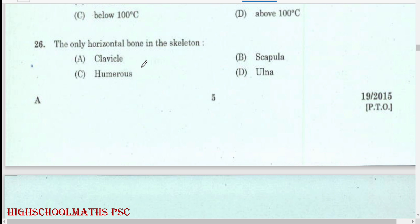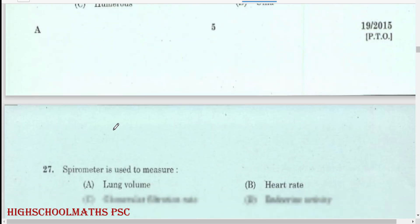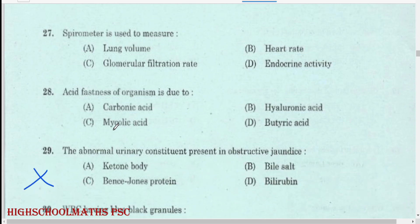The only horizontal bone in the skeleton: clavicle. Spirometer is used to measure lung volume.